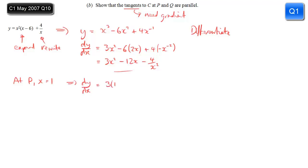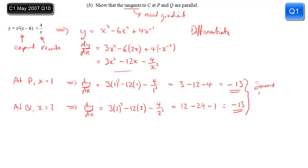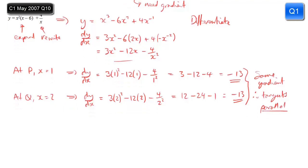At P, x equals 1: we get 3 lots of 1 squared minus 12 lots of 1 minus 4 over 1 squared, which is 3 minus 12 minus 4, giving minus 13. At Q, substituting x equals 2: 3 lots of 2 squared minus 12 lots of 2 minus 4 over 2 squared gives 12 minus 24 minus 1, which also gives minus 13. We've shown that the gradient of the curve at both points is minus 13, so the gradient of the tangent at both points is minus 13. Therefore the tangents at P and Q are parallel.